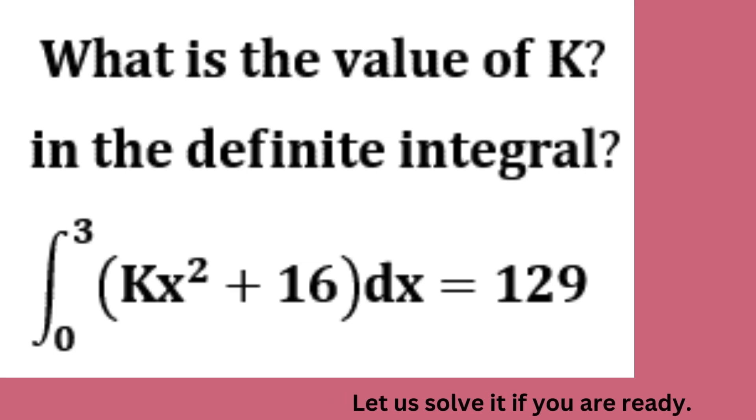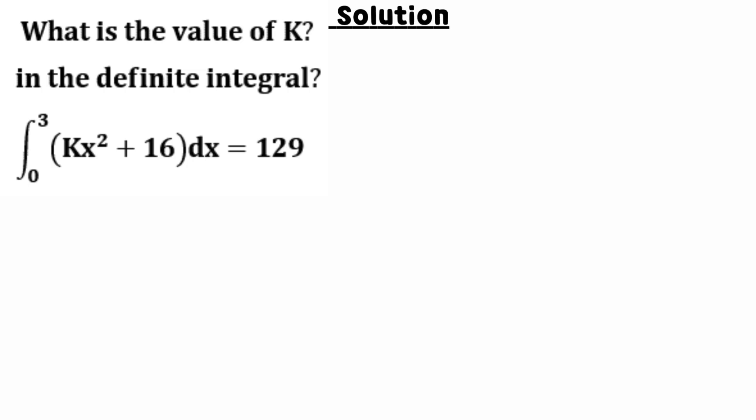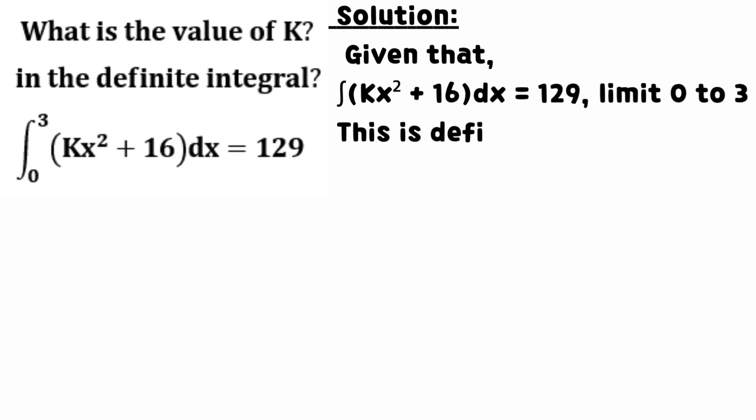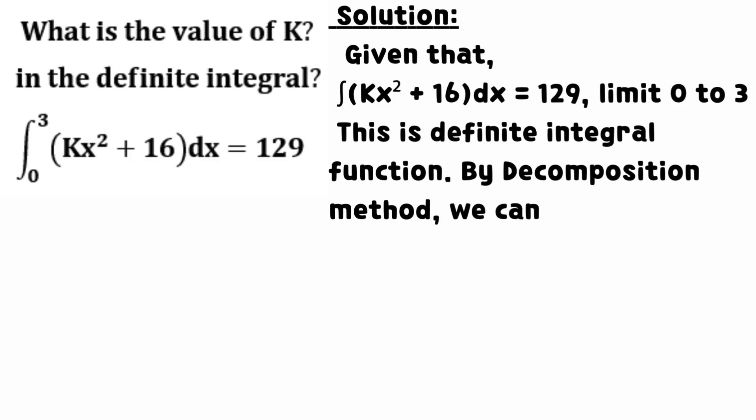Required to find the value of k in the given integral equation. Integrate the sum of k times the square of x and 16 with respect to x which equals to 129 for the limit 0 to 3.